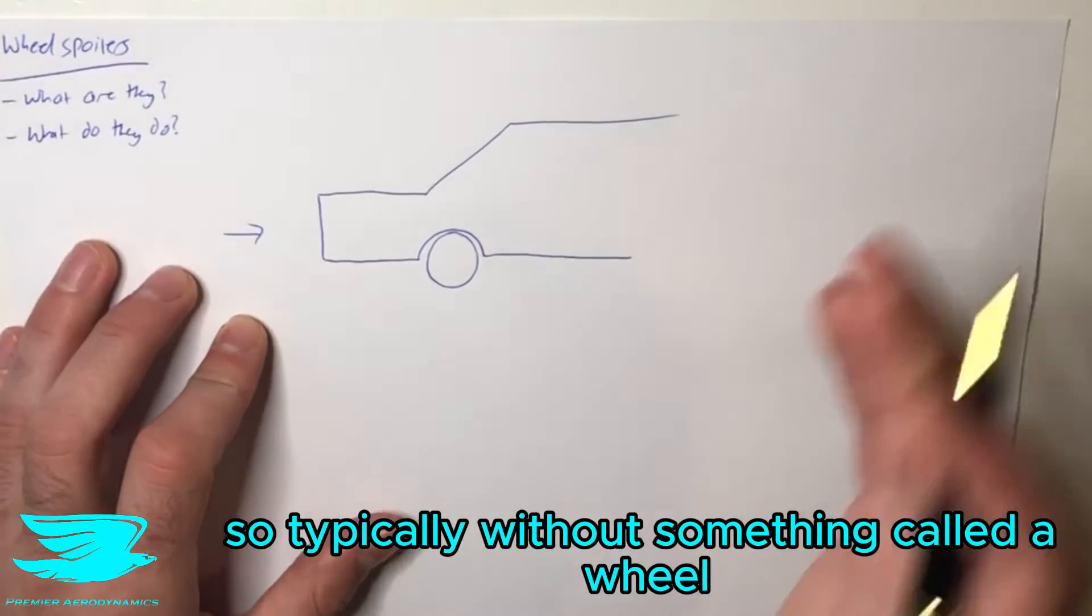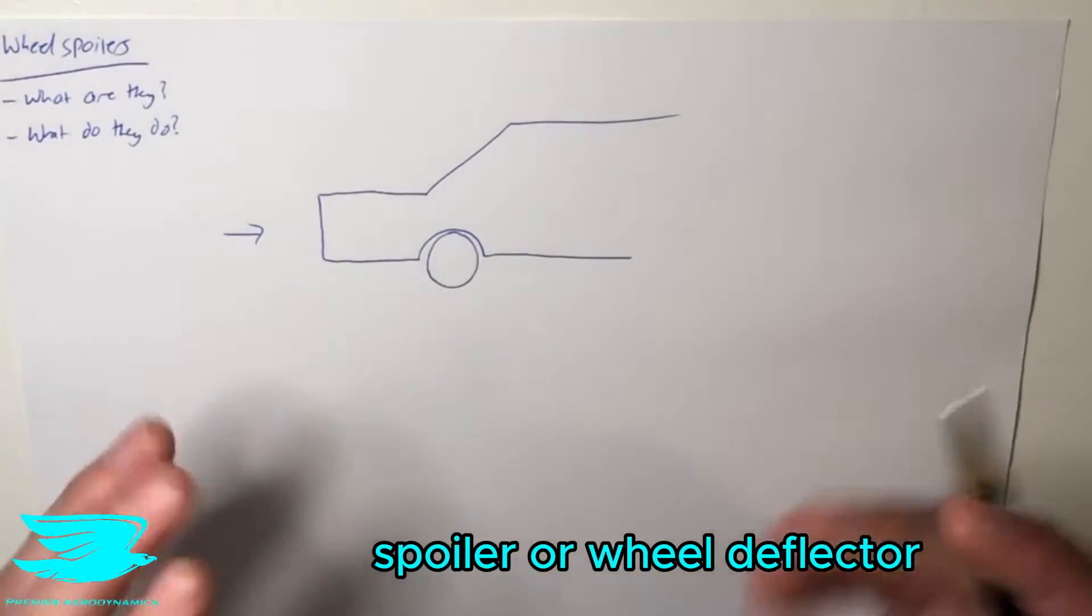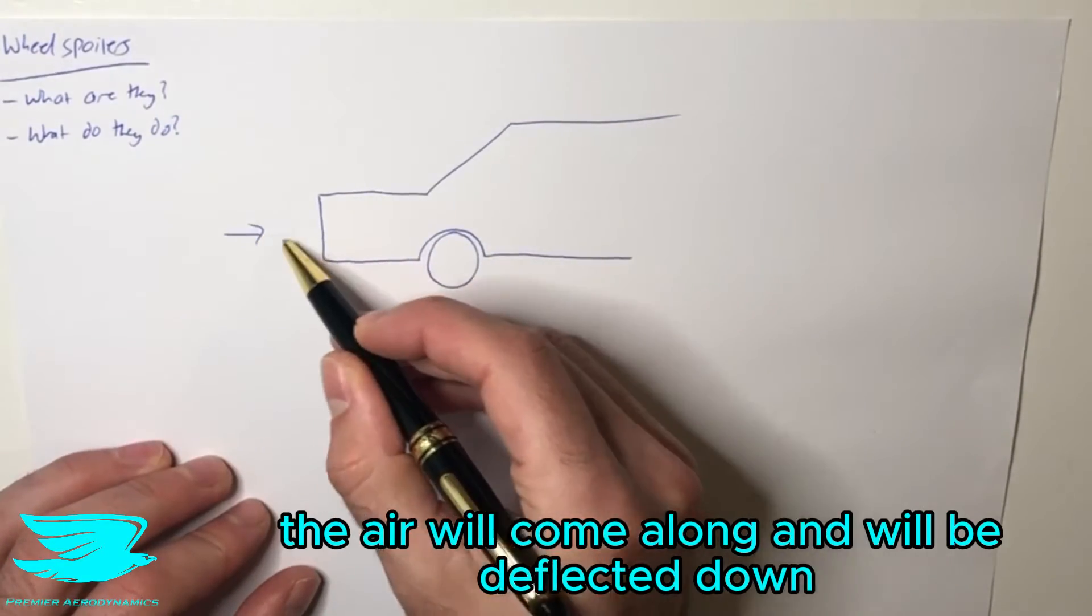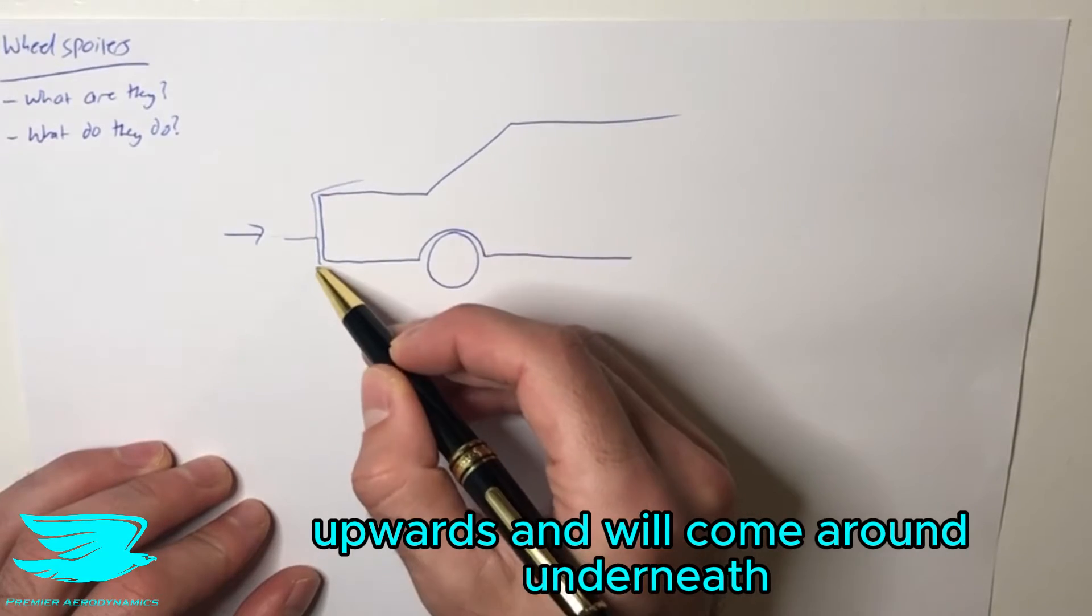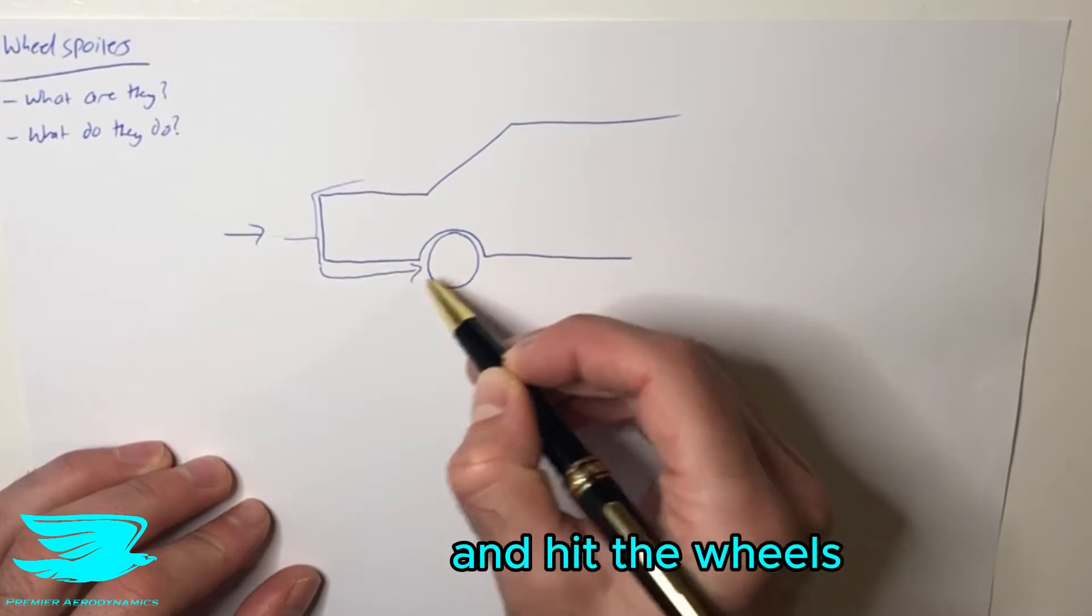So typically, without something called a wheel spoiler or wheel deflector, the air will come along and be deflected down, upwards, and come around underneath, hitting the front of the wheels.